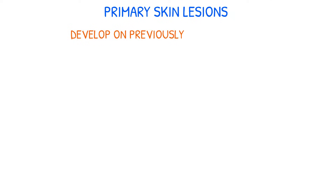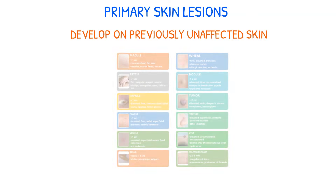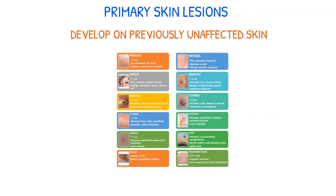Primary skin lesions are lesions that develop on previously unaffected skin. They are classified into various categories, each with its own set of features. Let's look at some of the more frequent kinds.